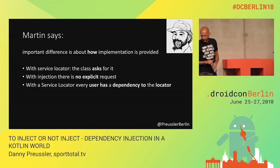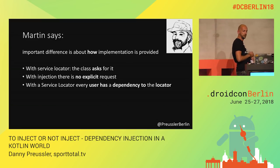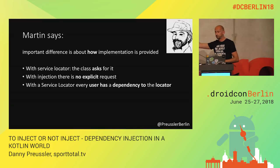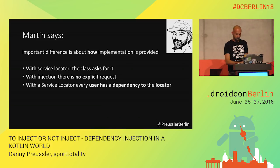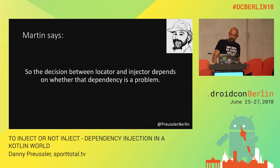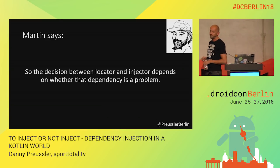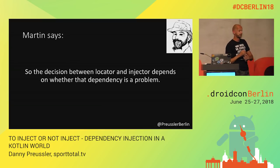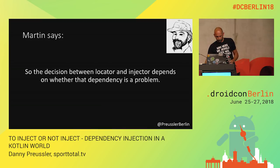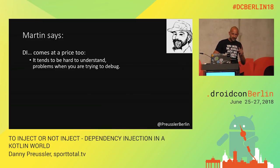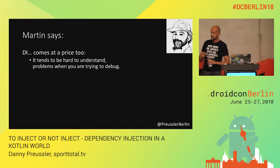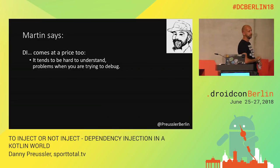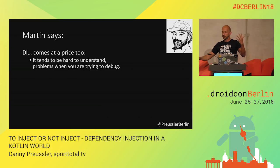With a service locator, every client of the service locator has a direct dependency to the locator. Martin says the decision between locator and injector is whether you care about this — he didn't see it as a huge problem back then. He also said dependency injection comes with a price: it tends to be very hard to understand and debug. So Martin was actually a bit of a fan of service locators, which is like the big anti-pattern it became later.